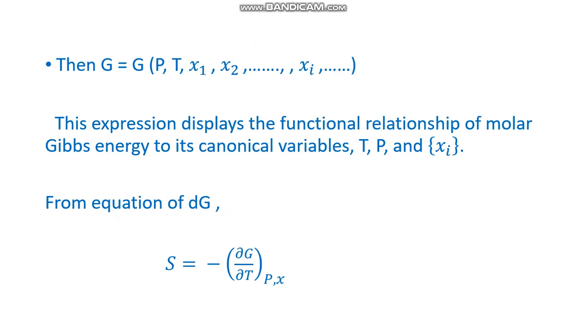Then the Gibbs energy is a function G = G(P, T, x1, x2, ..., xi). This expression displays the functional relationship of molar Gibbs energy to its canonical variables. The variables are called canonical variables: temperature, pressure, and xi.